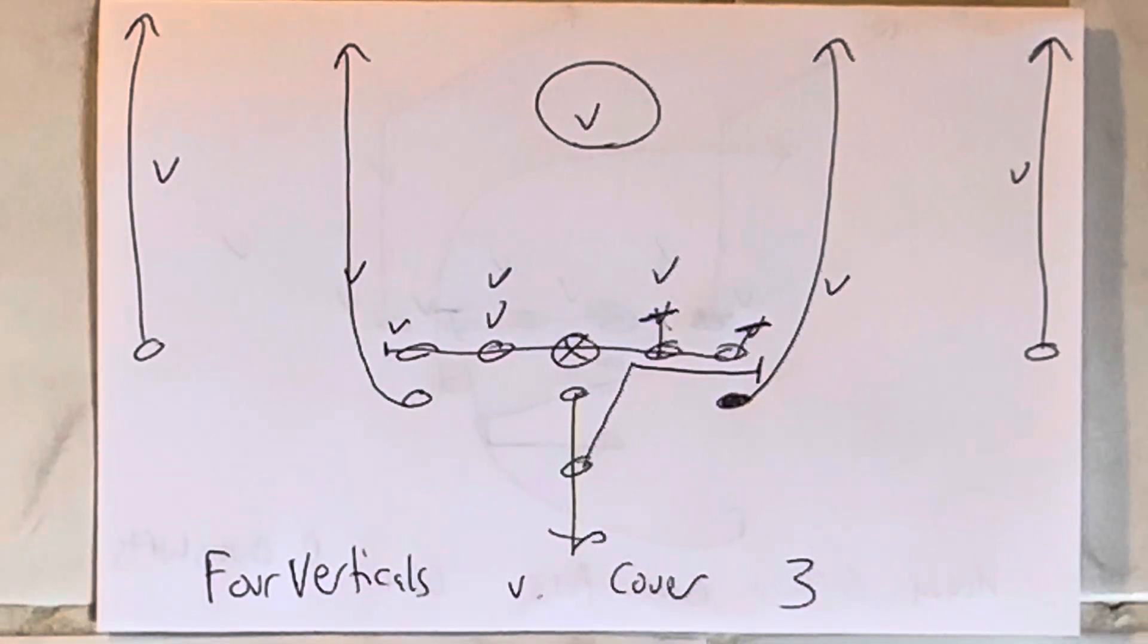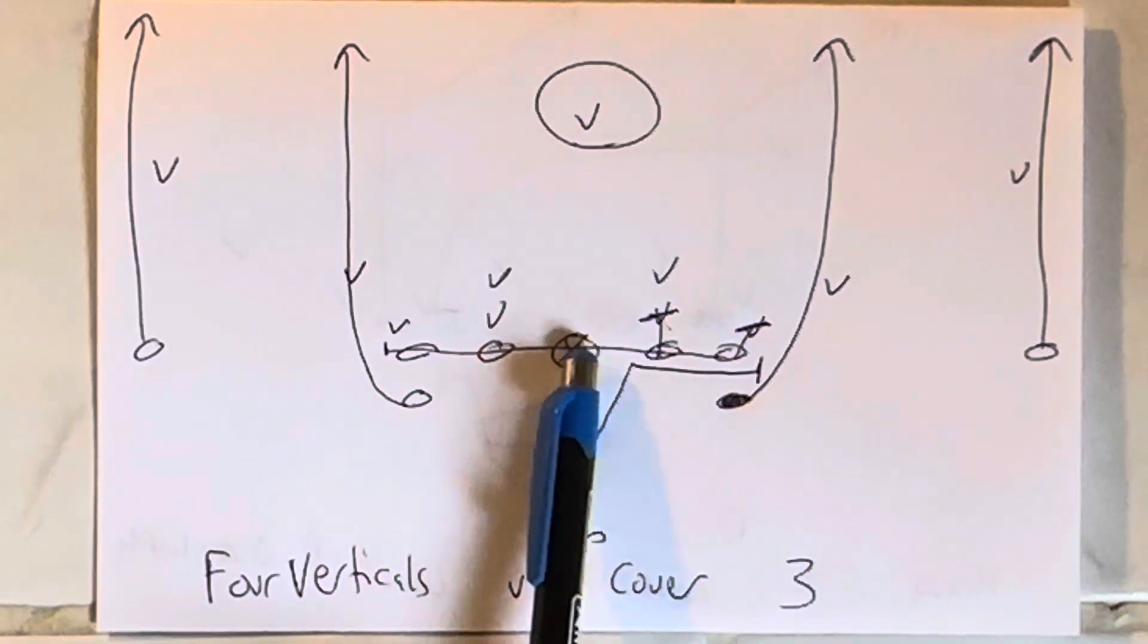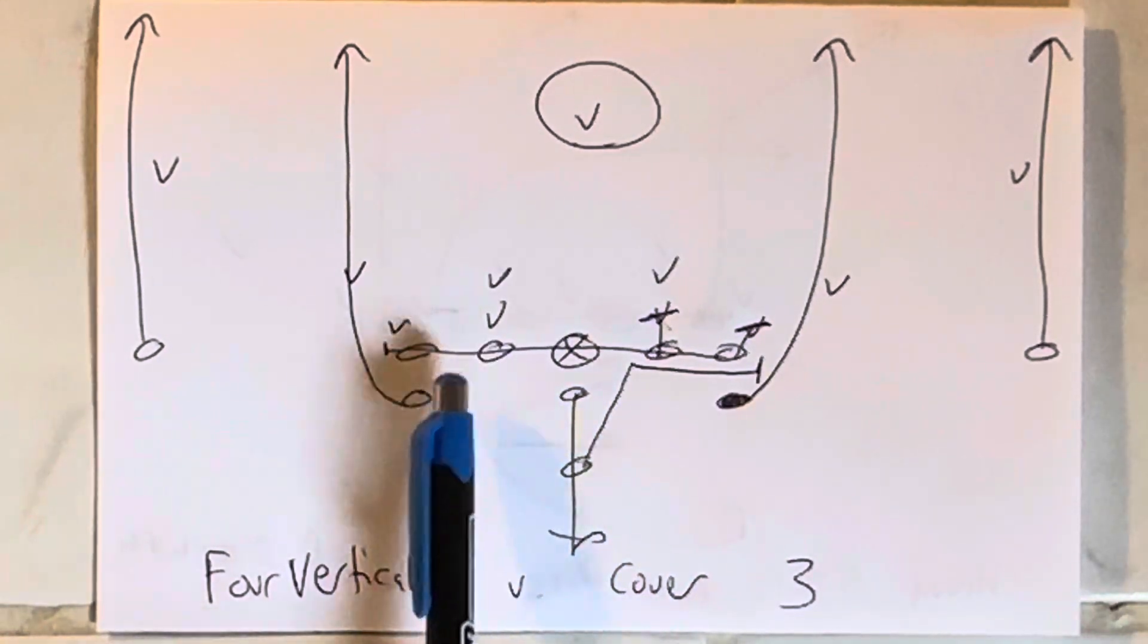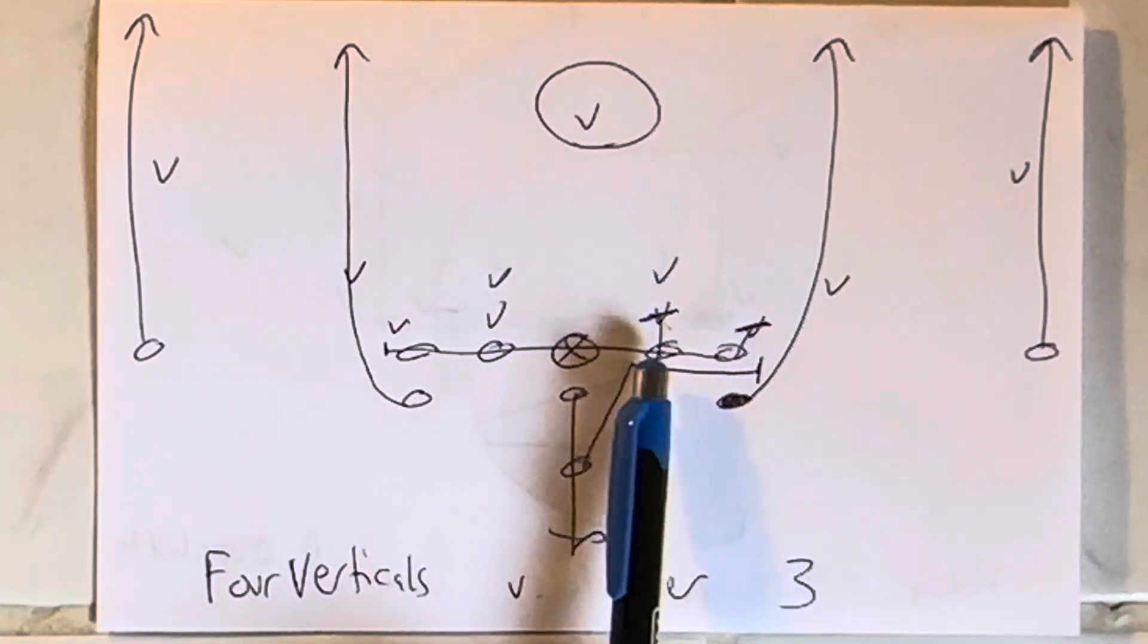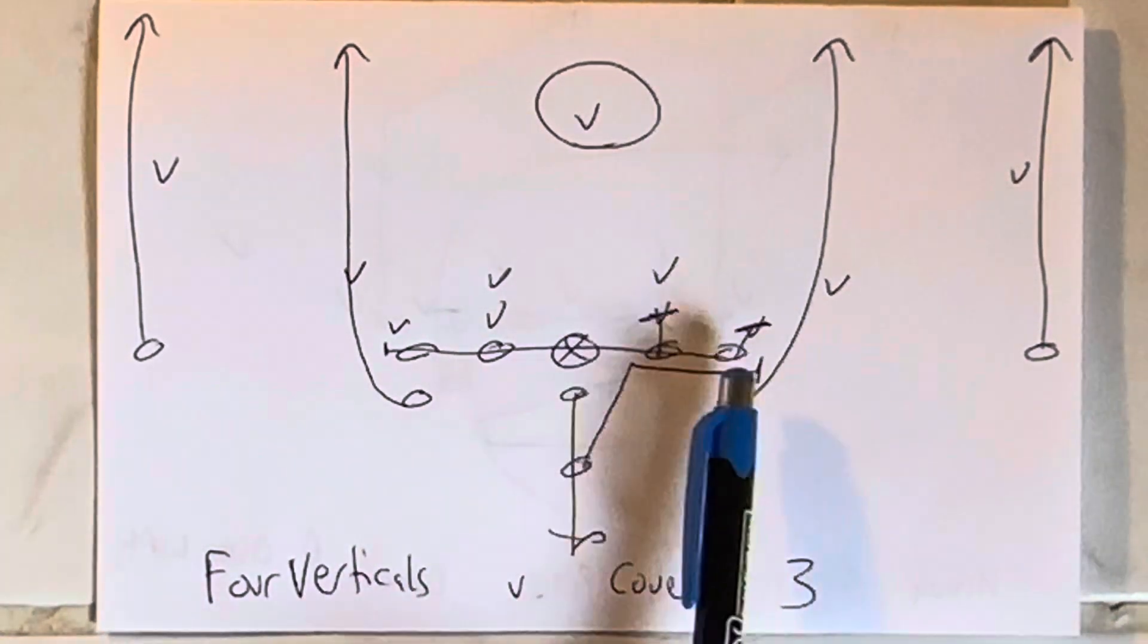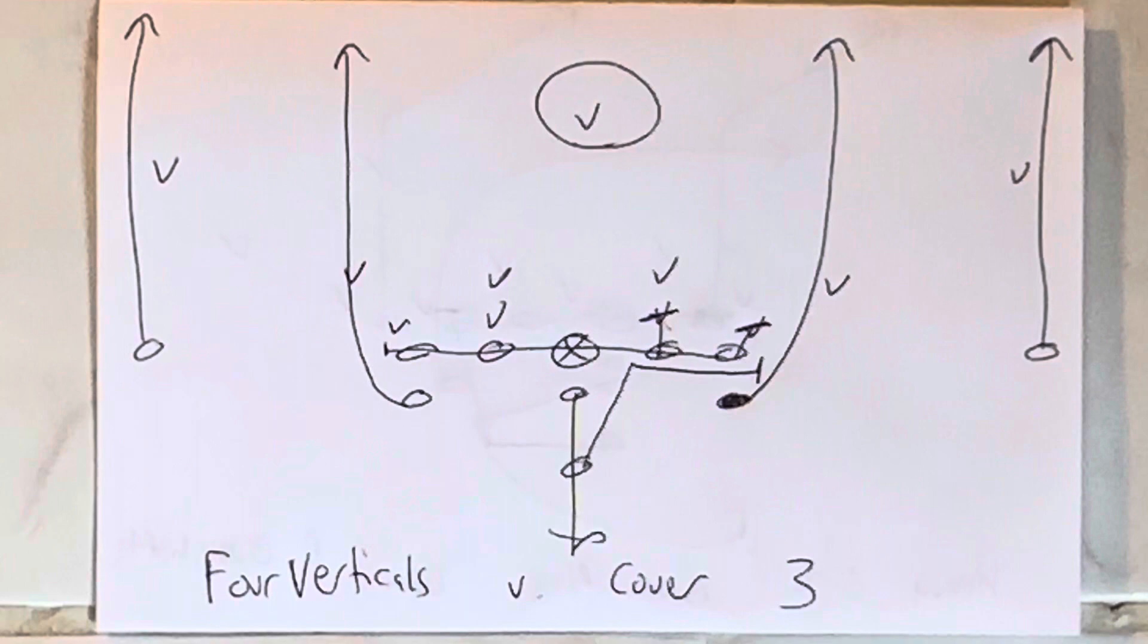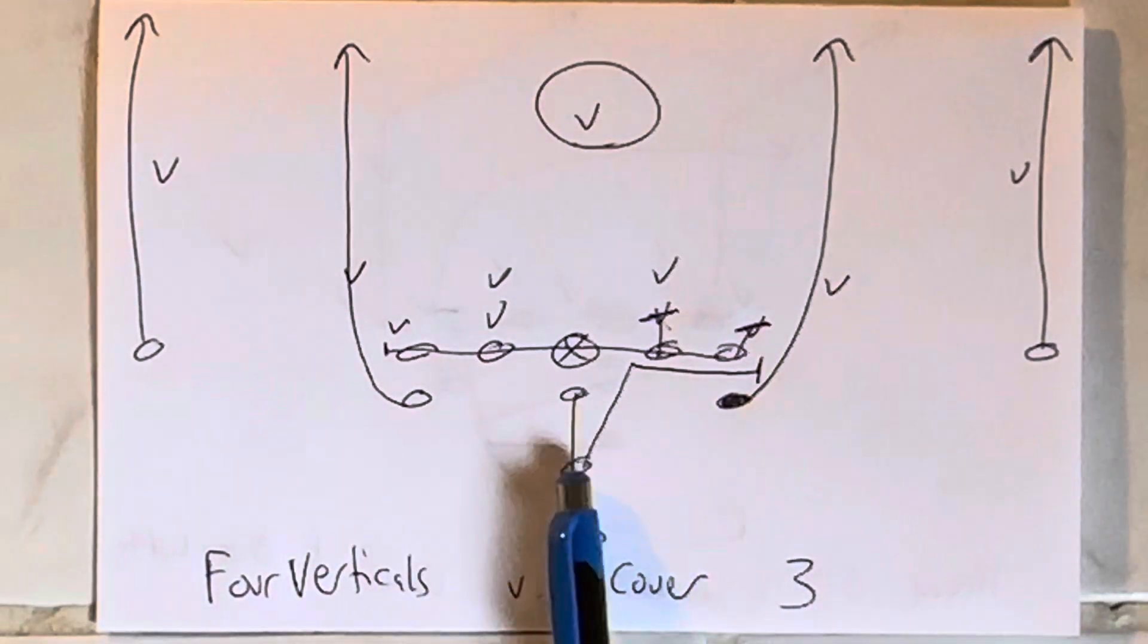So what happens is you call four verts to the right or what Paul Johnson used to refer to as 60. The center would block the left A-gap. The guard would block the left B-gap. The tackle would block the left C-gap. The guard would block the first play side defensive lineman. The tackle would block the second play side defensive lineman. The B-back would scan.